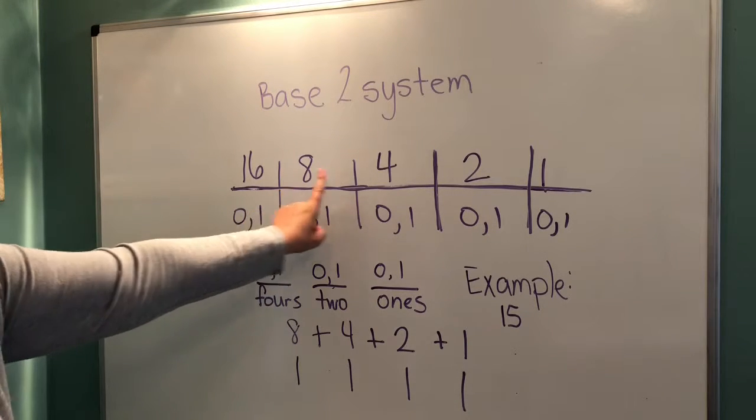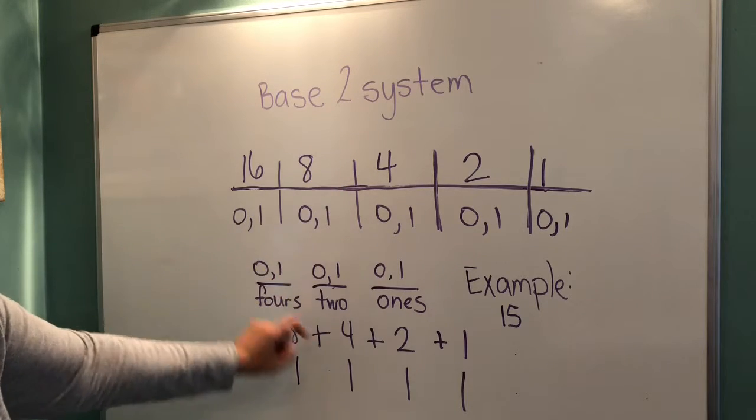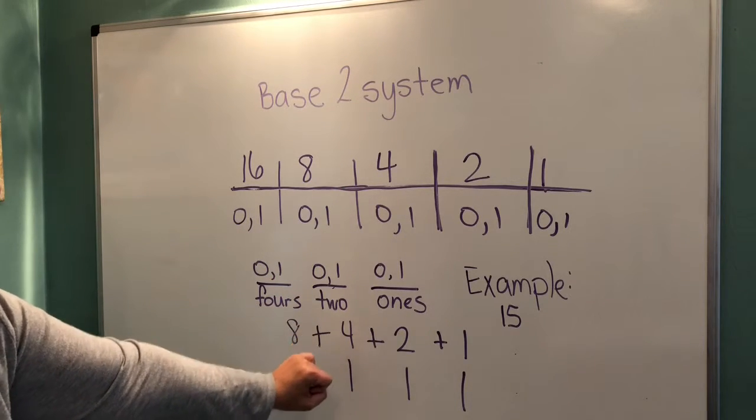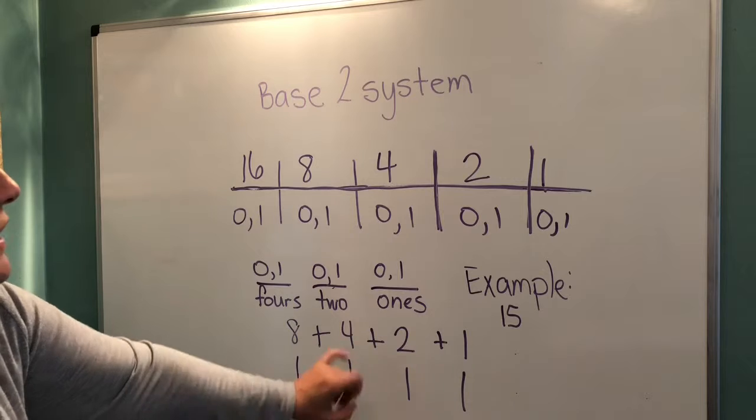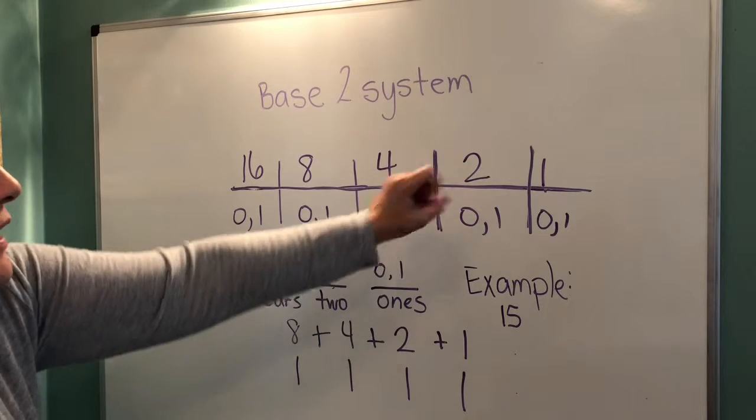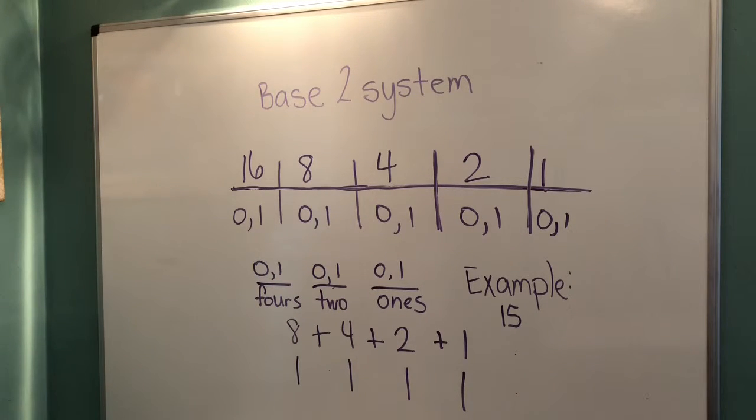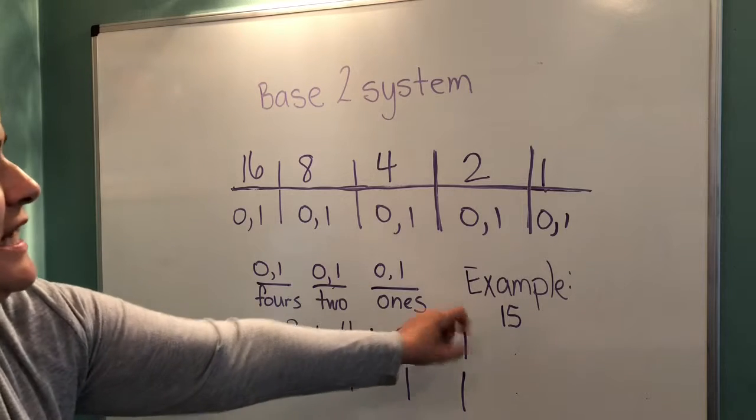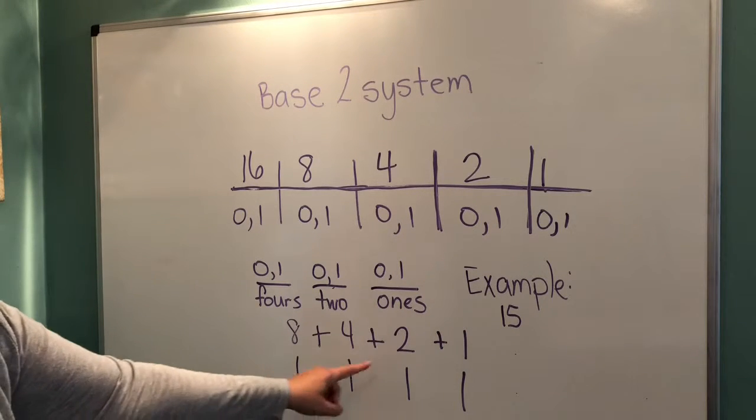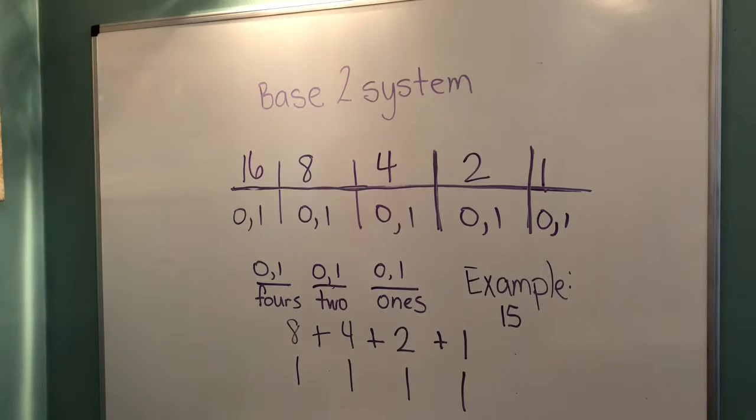Then, we move to the next place value. We need 1, 4. 8 plus 4 is 12. We need 1, 2. 12 plus 2 is 14. And we need 1, 1, which makes 15. So, writing 15 in our base 10 system would be 1, 1, 1, 1 in the base 2 system.